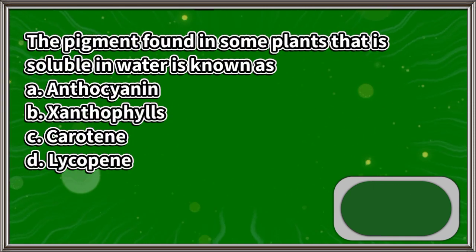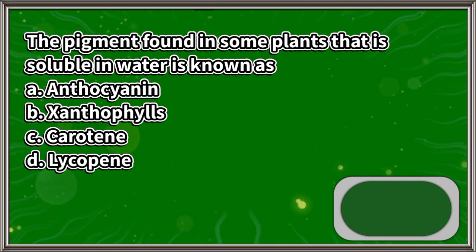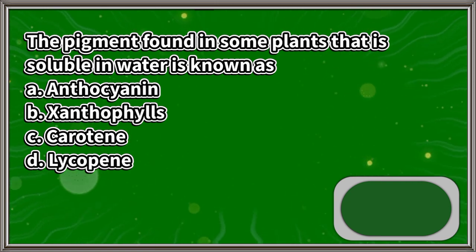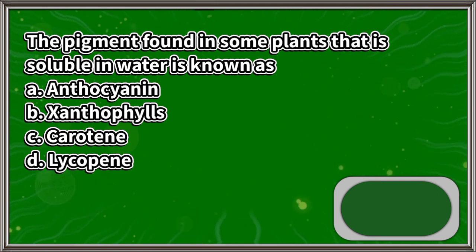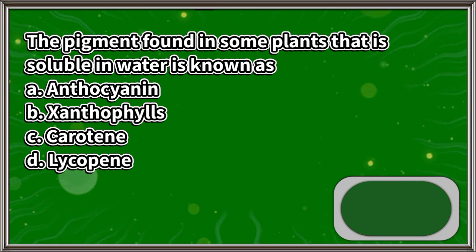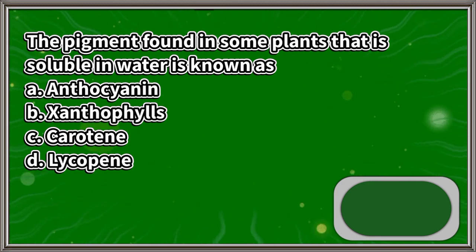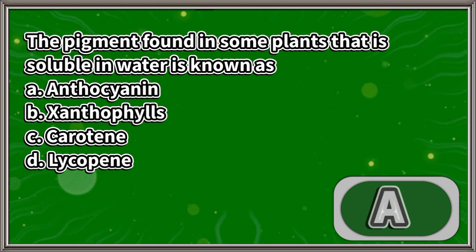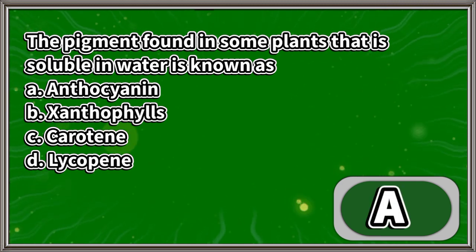The pigment found in some plants that is soluble in water is known as: A. Anthocyanin, B. Xanthophylls, C. Carotene, D. Lycopene. The answer is letter A.